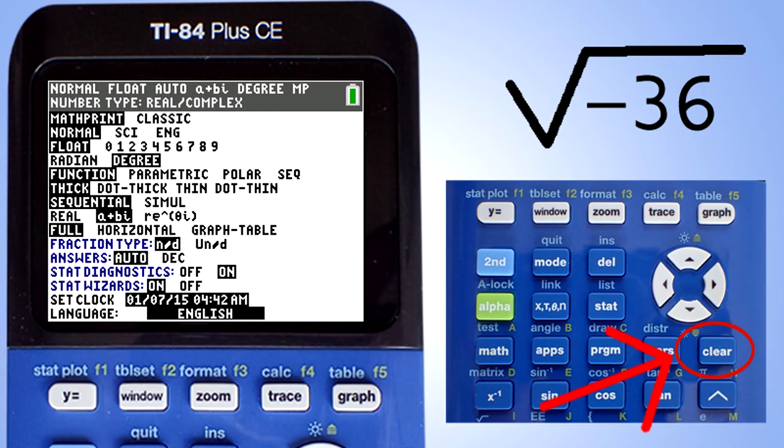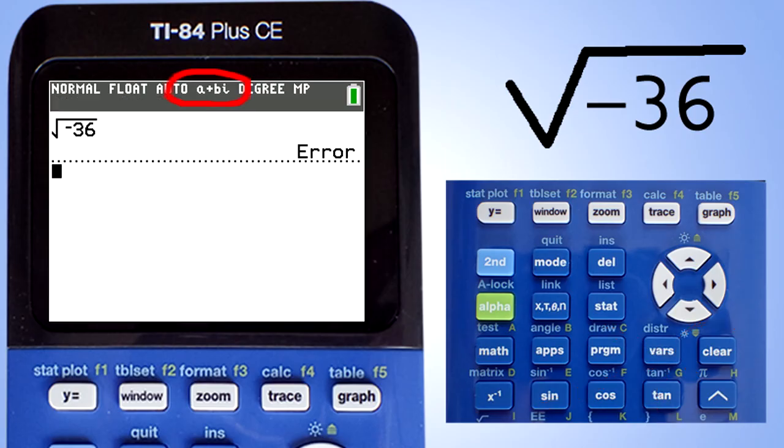You can see here that the mode has changed from real numbers to imaginary numbers. Re-enter the square root of negative 36. Now press the enter key to solve the problem. And there is the answer, 6I.